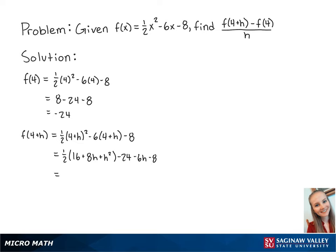Multiply this out and combine like terms, we get 8 plus 4h plus 1 half h squared minus 32 minus 6h. Combining like terms once more, we get 1 half h squared minus 2h minus 24.